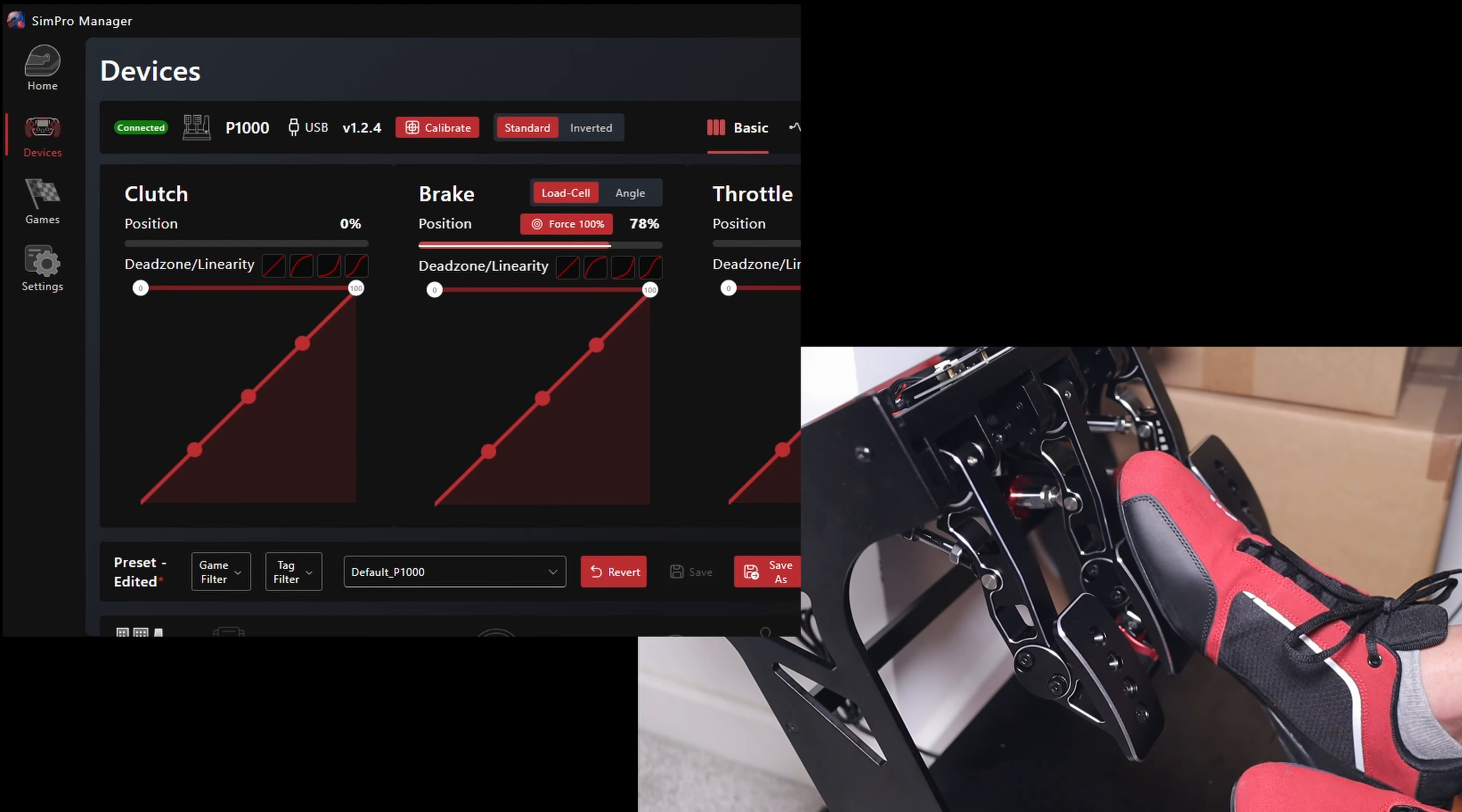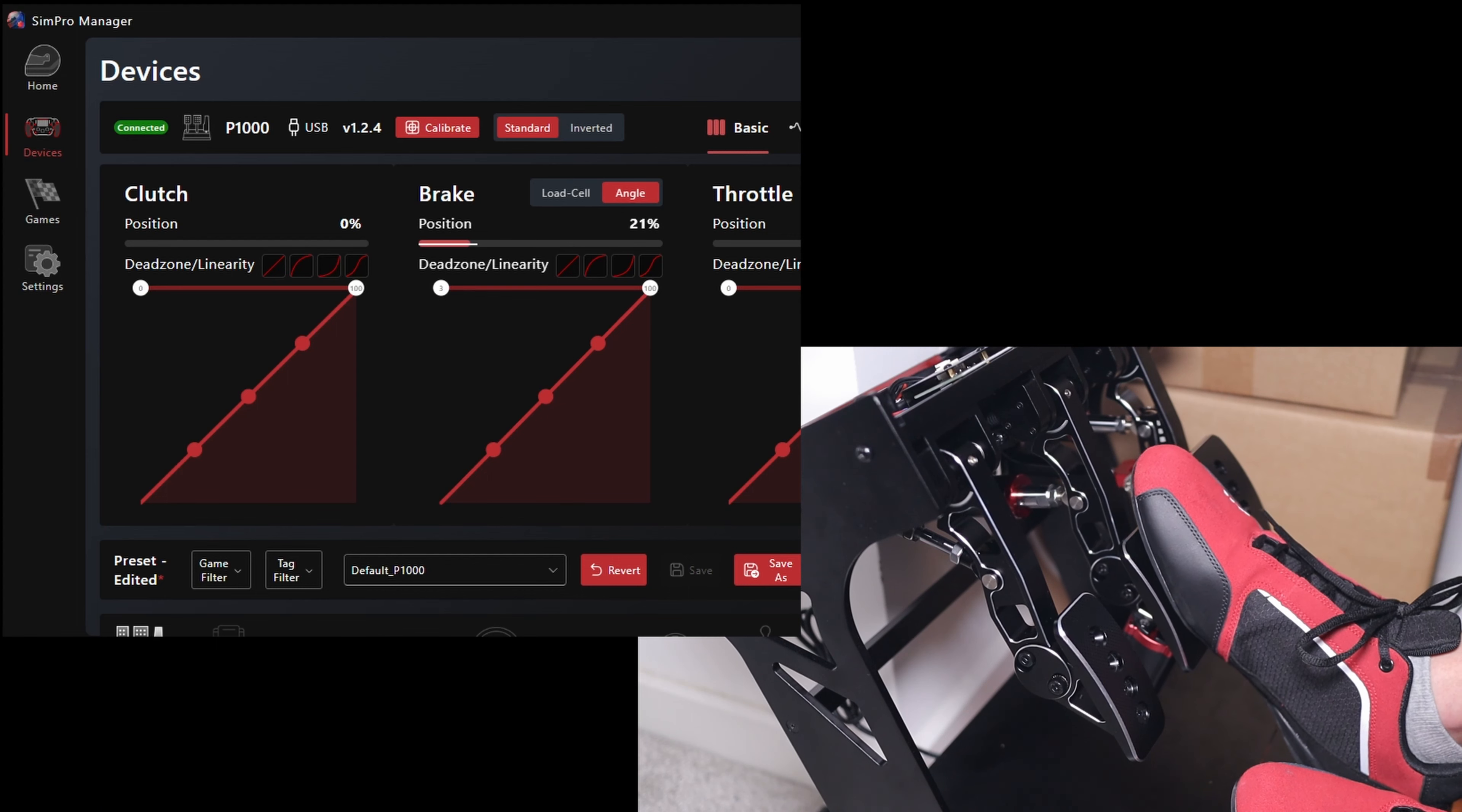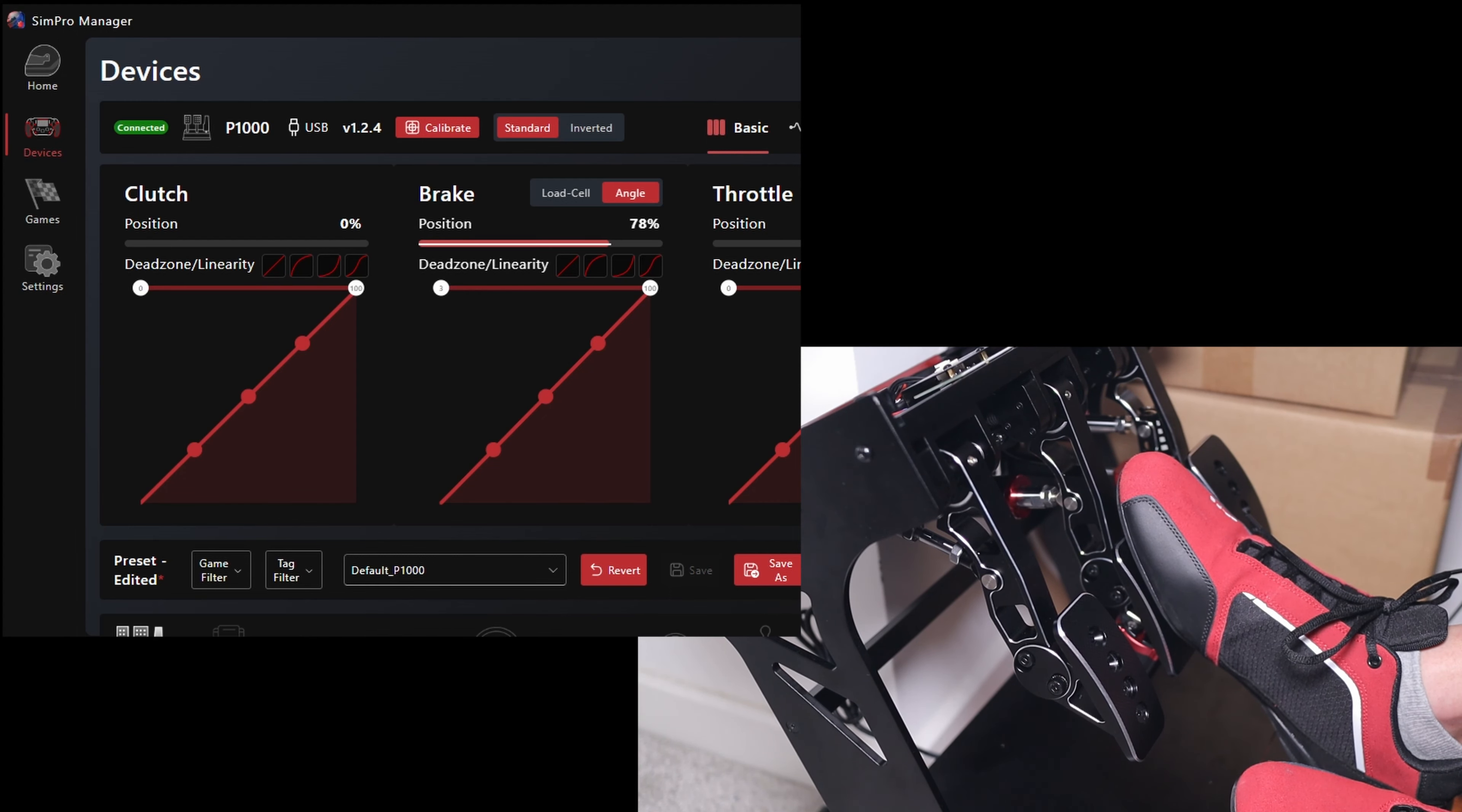Now you might claim that this is because I simply am unable to hold a constant pressure, but when I switch to hall sensor angle position tracking, it barely moves, so for me it's a clear indicator of an issue with load cell elastomer combination.